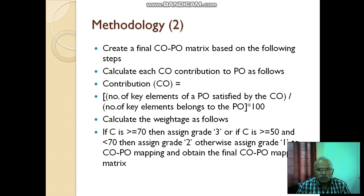For example, if a course outcome is satisfying 4 key elements of program outcome 1, then program outcome assume that it is having total 5 elements. It is 4 by 5 into 100, which I presented in subsequent slides. Now, you calculate weightage as follows. If it is greater than 70%, that means if the course outcome C is greater than 70, this is the threshold which you can discuss in your department board of studies meeting and can keep.